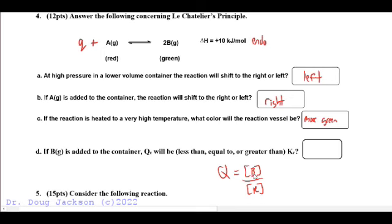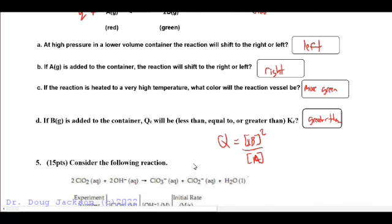In this case, it would be B squared over A. If we increase the amount of B by some value, it's going to increase the value of Q by X squared, and that's going to make it greater than K. When the product side is too large, the reaction quotient will shift back left in order to form the proper equilibrium.